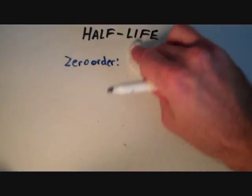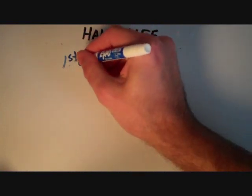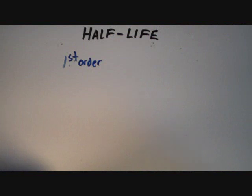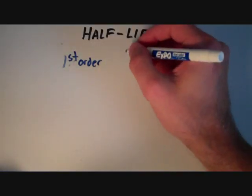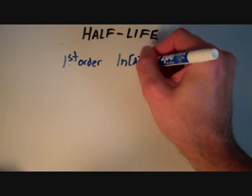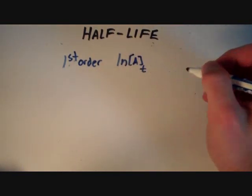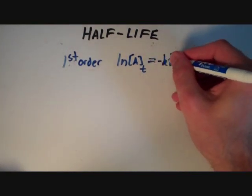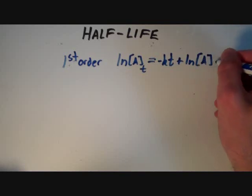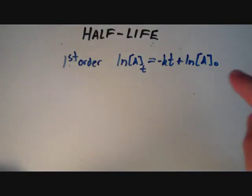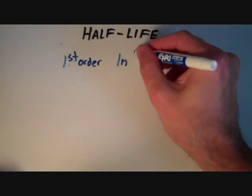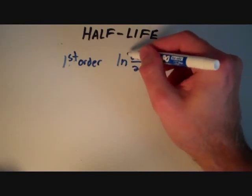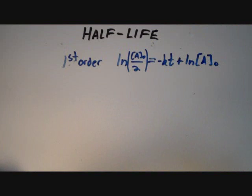So now let's move on to first-order half-life. The first-order integrated rate law says that the natural logarithm of the concentration at time T is equal to minus kT plus the natural logarithm of the initial concentration. And once again, we can replace the concentration of A at time T with the initial concentration over 2, giving us the natural logarithm of one-half of the initial concentration on the left-hand side.